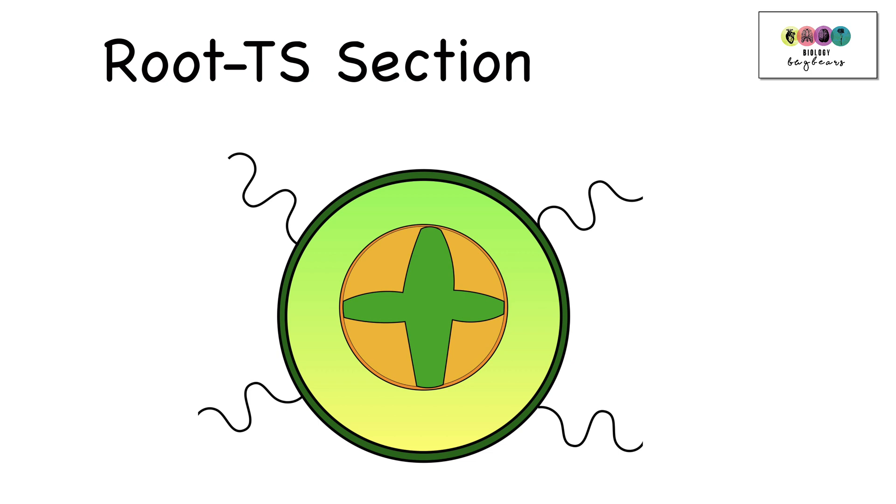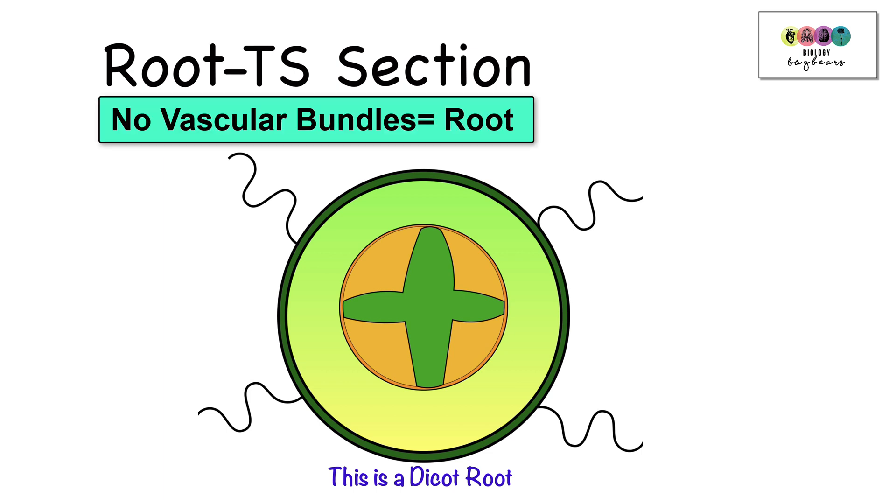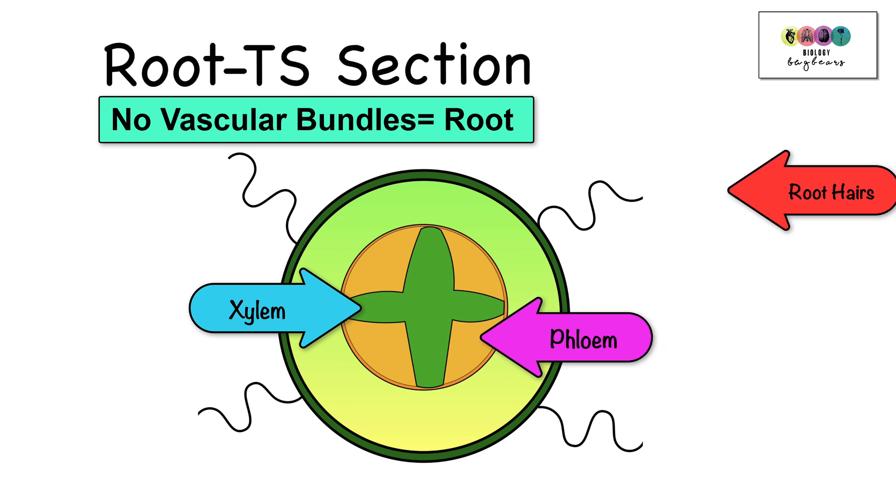The other root diagram is the TS section, or the transverse section, so cutting across the root and looking in. So how would you know that this is a root? Well, first off, the first thing that you notice is that there are no vascular bundles in the root. Look at the arrangement of the xylem and the phloem. And secondly, you have the root hairs.